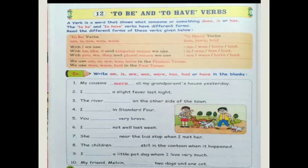Read the different forms of these verbs given below. To be verbs are: am, is, are, was, and were. And to have verbs are: has, have, had.